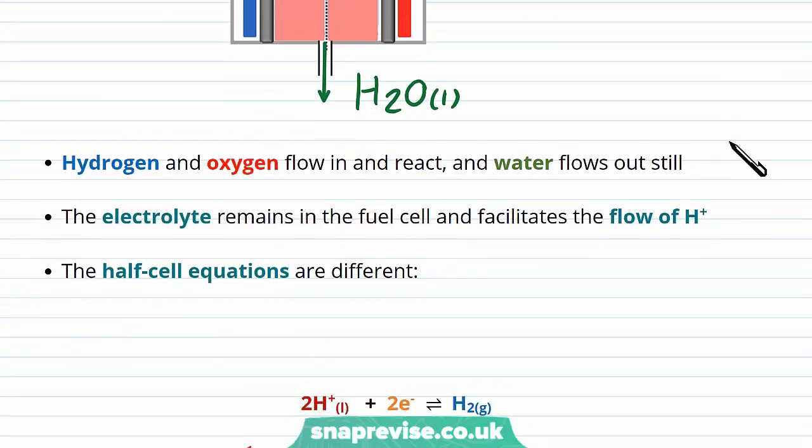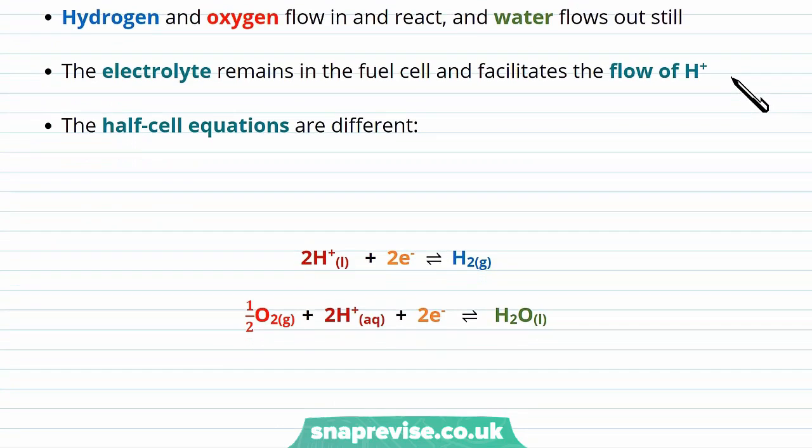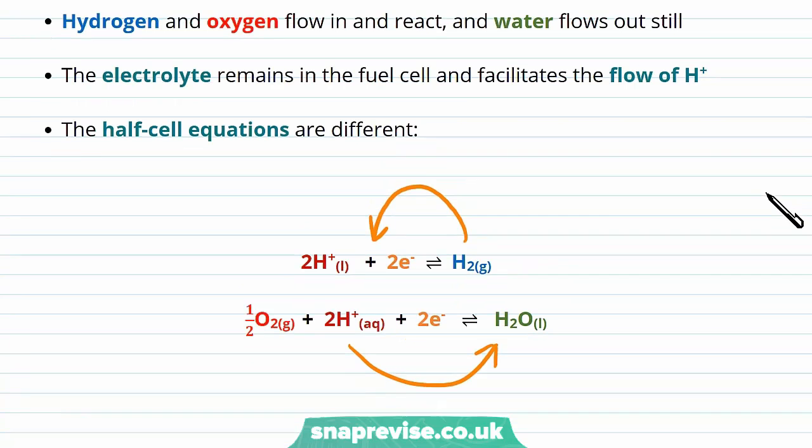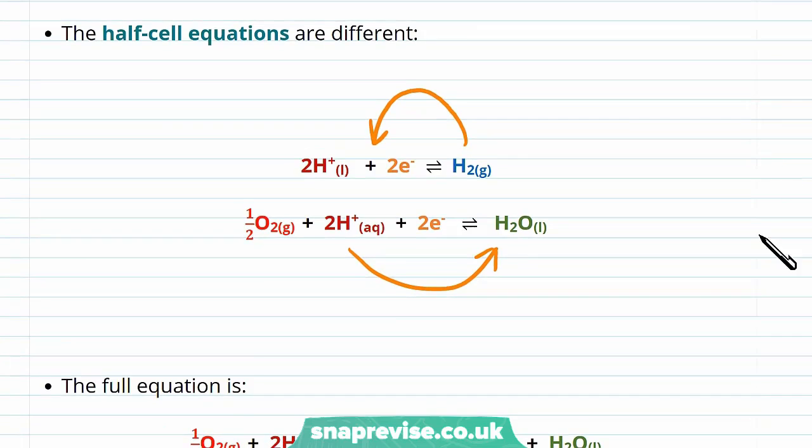Let's have a look at the reactions that go on in the acidic hydrogen fuel cell. This time, there are no OH- ions present, and the hydrogen gas just breaks down into H+ ions and two electrons. The oxygen combines with these H+ ions and the two electrons to form the water. It's a much more simple reaction equation.